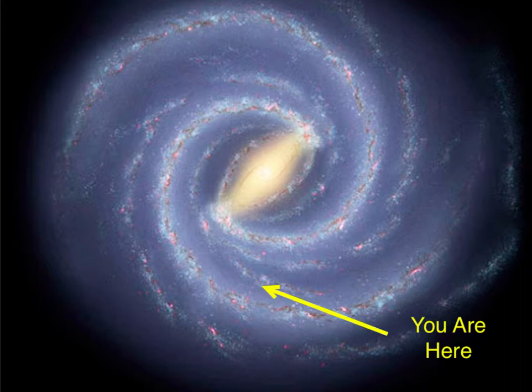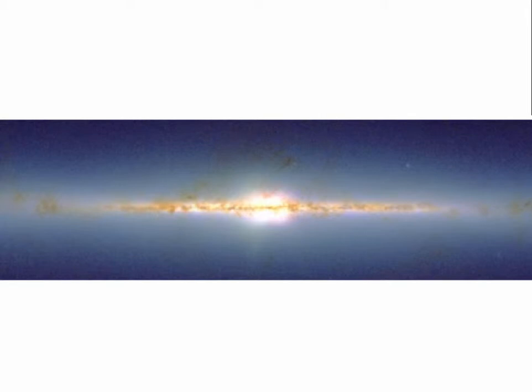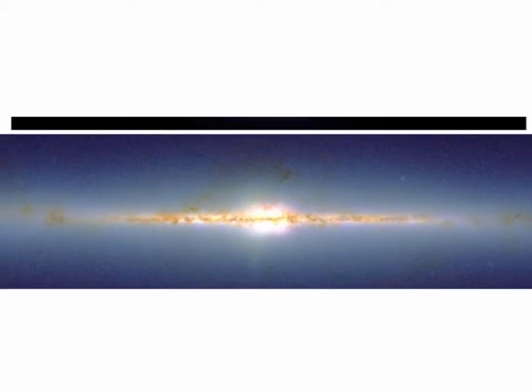The Sun is located about two-thirds of the way out, and we are in between two spiral arms. If we look at the Milky Way from the side, it's a disk shape — sort of a pancake or frisbee shape — and we are inside that disk. We see the thin disk of the Milky Way stretching out to either side, and it's a little puffier in the center.